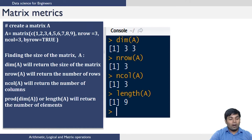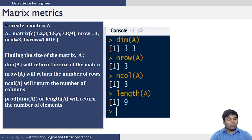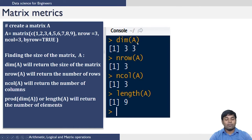Once a matrix is created, how can you know the dimension of the matrix, how many rows there are, how many columns, and how many elements? We can use the following commands. dim(A) will return the size of the matrix, for example whether it is 3 by 3 or 4 by 5. nrow(A) will return the number of rows and ncol(A) will return the number of columns. Either length(A) or the product of dimensions of A will return the number of elements in the matrix. For the matrix A created by this command, dim(A) gives 3 by 3, number of rows is 3, number of columns is 3, and the number of elements is 9.